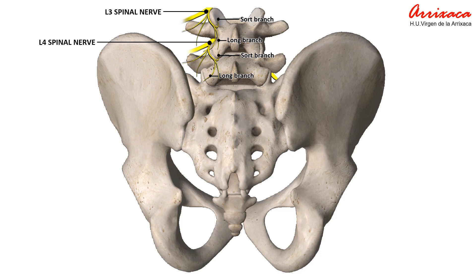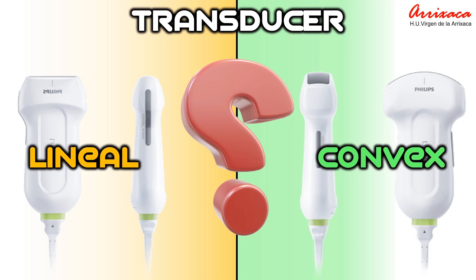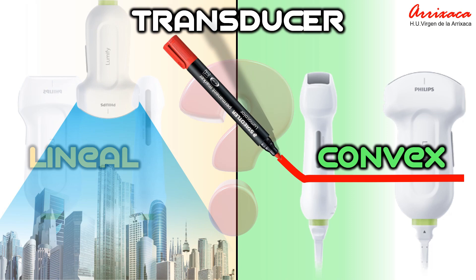A curvilinear low-frequency ultrasound transducer is used for lumbar scanning. This transducer allows deeper penetration and wider viewing of deeper structures through the bony windows.